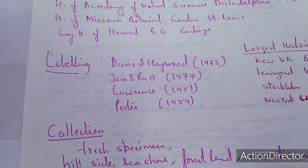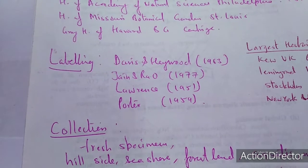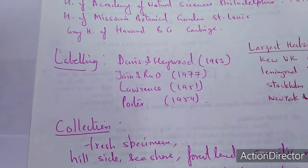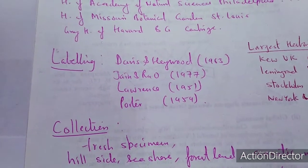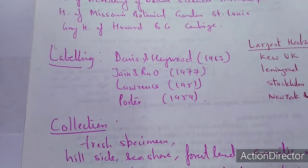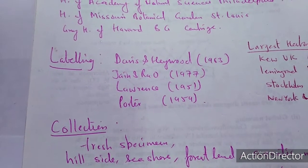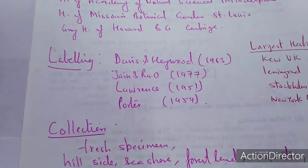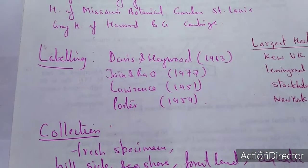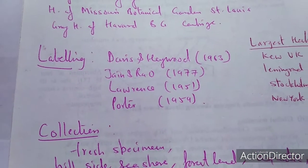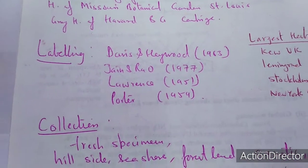There are certain terms connected with the herbarium. Labeling has been discussed by David and Heywood's formula and also by Jain and Rao 1977, Lawrence, as well as Potter.